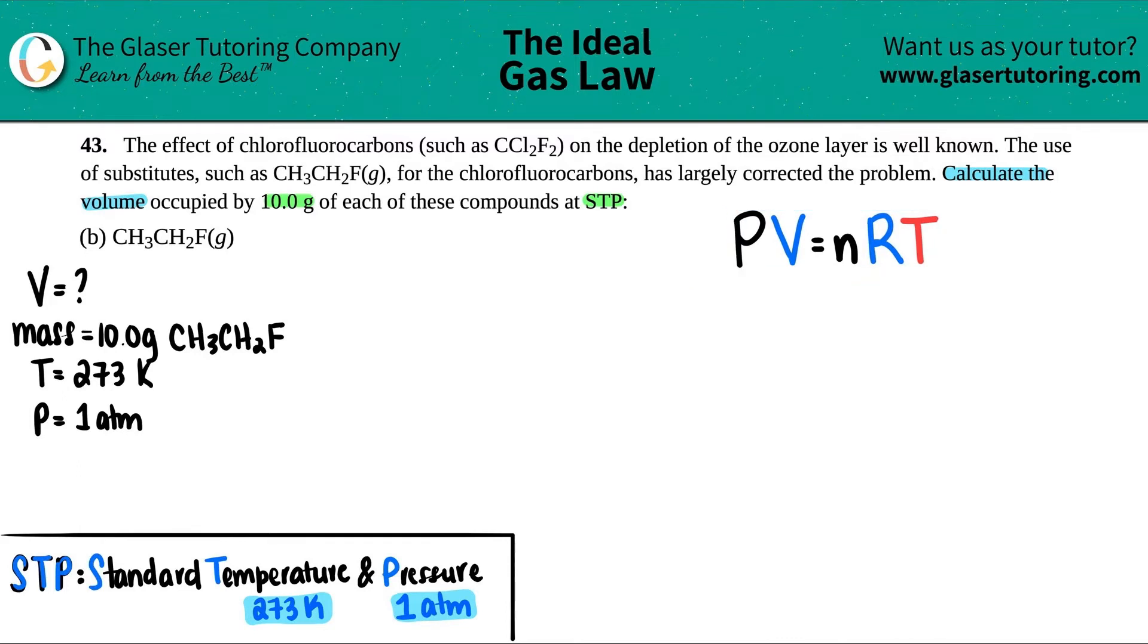So now, all we just have to do is plug in our values. Now remember, the R value is 0.0821, and the units make all of the other units locked in. So the R value units are 1 atm times liter divided by mol times Kelvin. So that's why the pressure has to be in 1 atm.